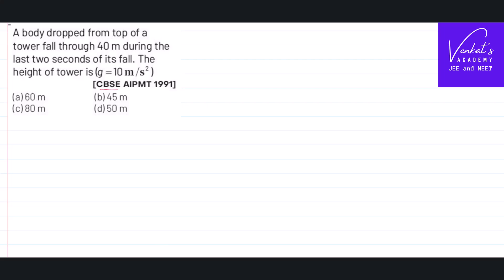This is a previous IIPMT question, very old of course, but there is a good concept involved, that is why I am solving it. A body is dropped from the top of a tower and falls through 40 meters during the last 2 seconds of its journey. Then what is the height of the tower?